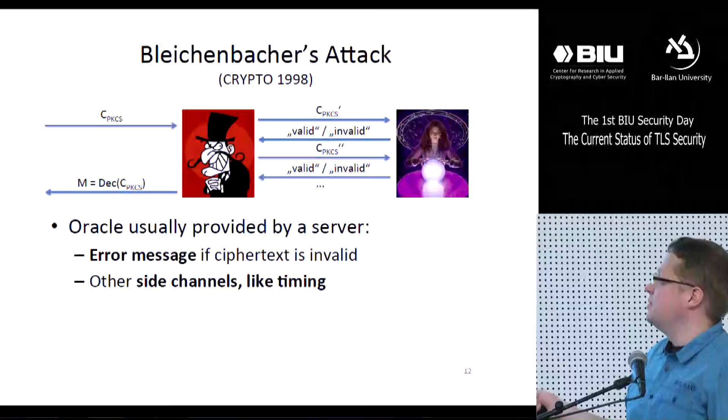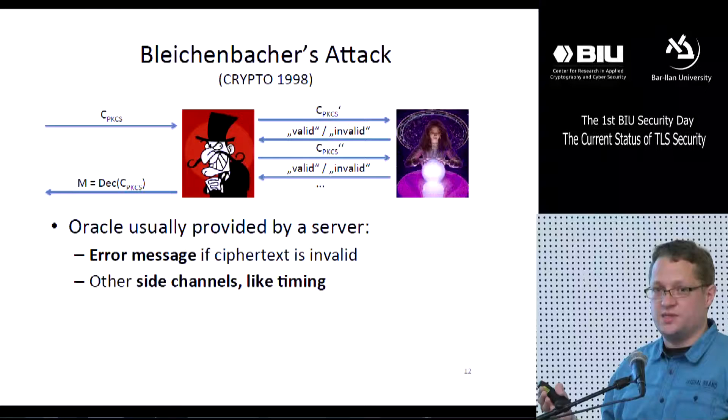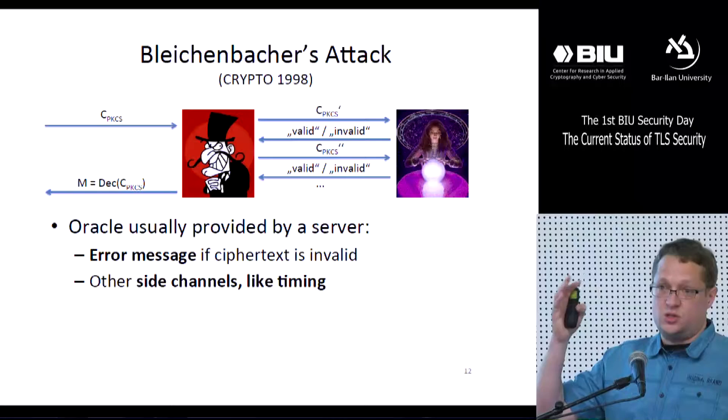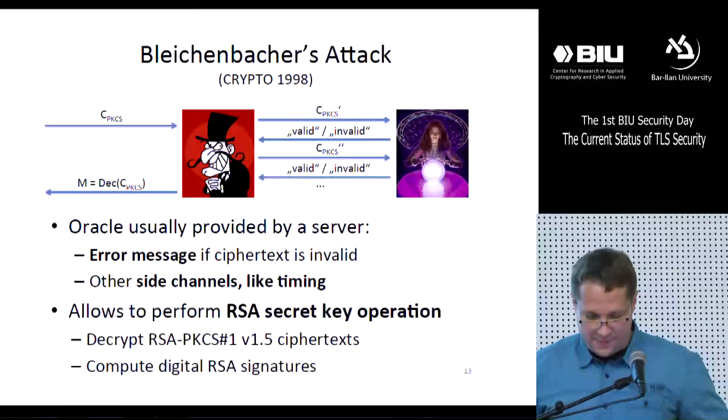In practice, this oracle is usually provided by a web server that responds with an error message if a given ciphertext is invalid. This is what SSL implementations did in 1998 when Bleichenbacher published his attack. TLS was then fixed with several countermeasures, and the standards noted that an attacker should not be able to distinguish valid from invalid ciphertexts. But many techniques may still enable this — for instance, by checking the timing the server needs to process a ciphertext, since an invalid ciphertext might take longer, for example because a Java exception is thrown.